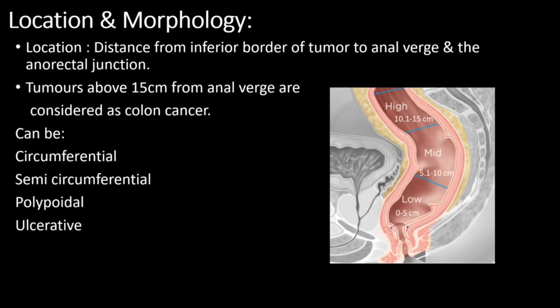For tumor location, we measure the distance from the inferior border of the tumor to the anal verge and anorectal junction. If 0 to 5 cm, it is a low rectal tumor. If 5.1 to 10 cm, it is a mid rectal tumor. If 10.1 to 15 cm, it is a high rectal tumor. Tumors above 15 cm from the anal verge are considered as sigmoid colon tumors. Morphology types include circumferential, semicircumferential, polypoidal, and ulcerative.